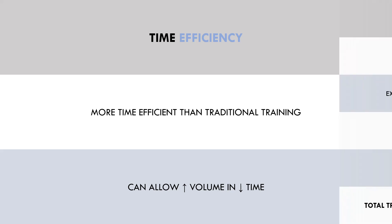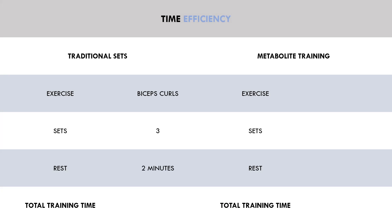For example, let's say a trainee performs three sets of bicep curls with two minutes rest between sets, with each set taking one minute to complete — a total of seven minutes. If rest periods are shortened to 45 seconds, the three sets take four and a half minutes. A fourth set could then be added, taking the total to six minutes and 15 seconds. In this scenario, the trainee is performing more volume and still finishing their training in a faster time.